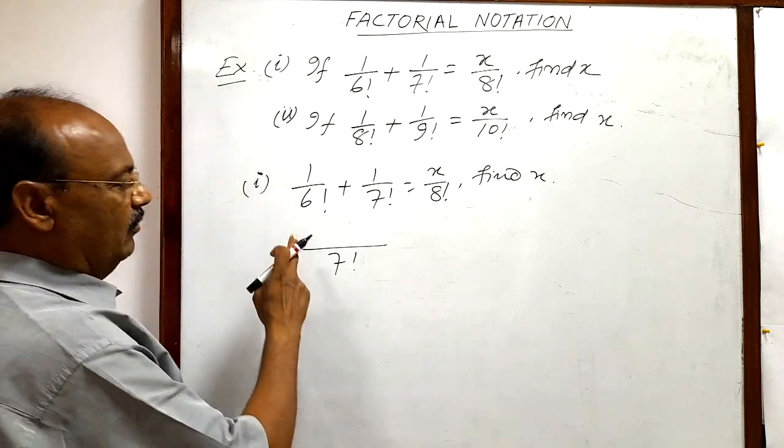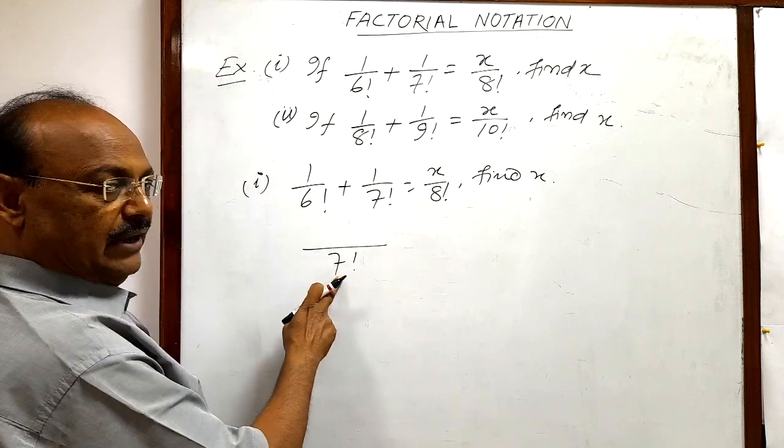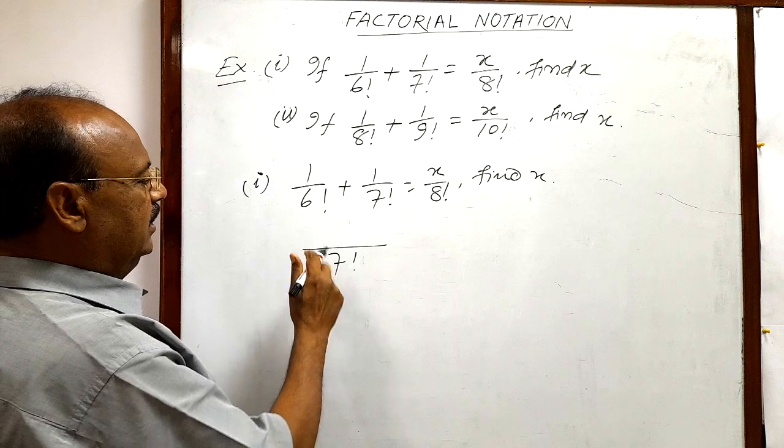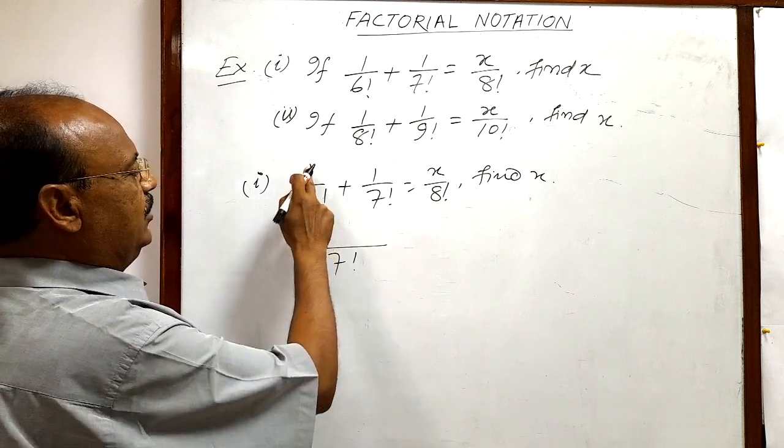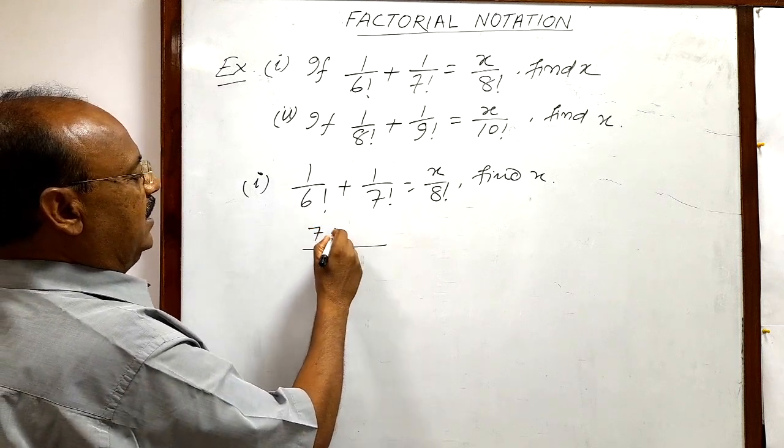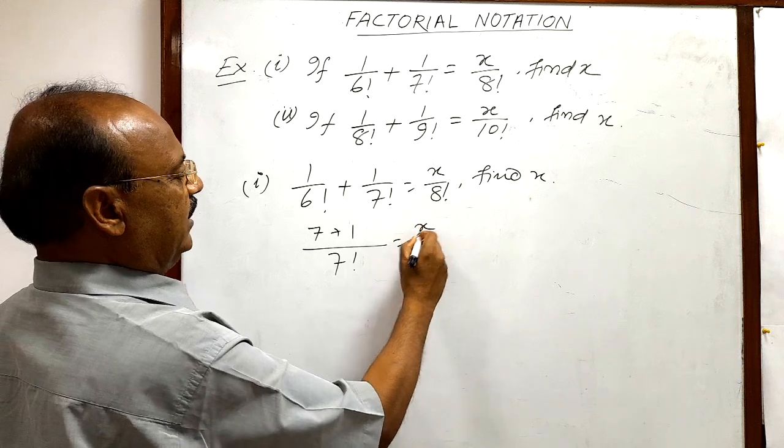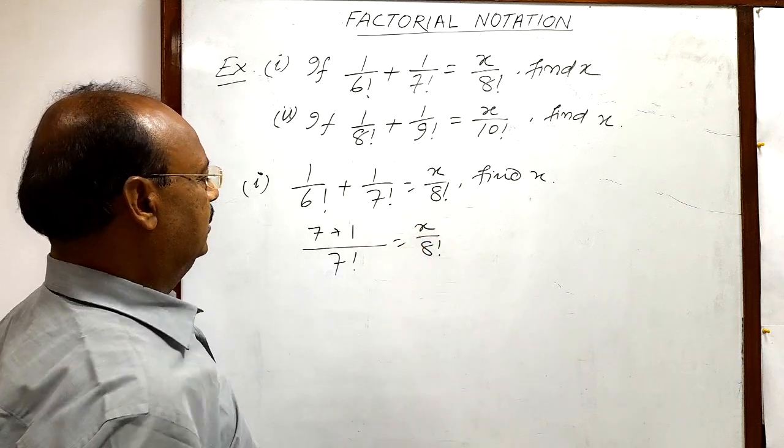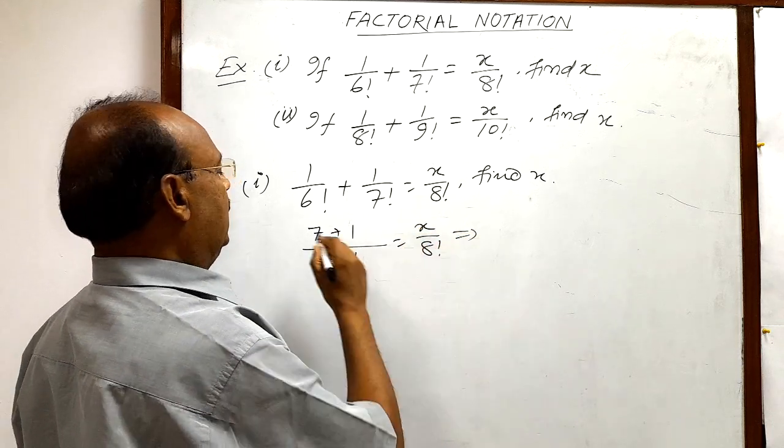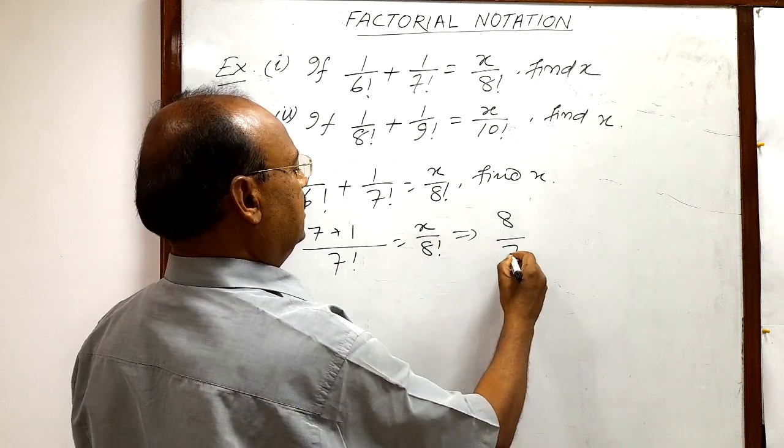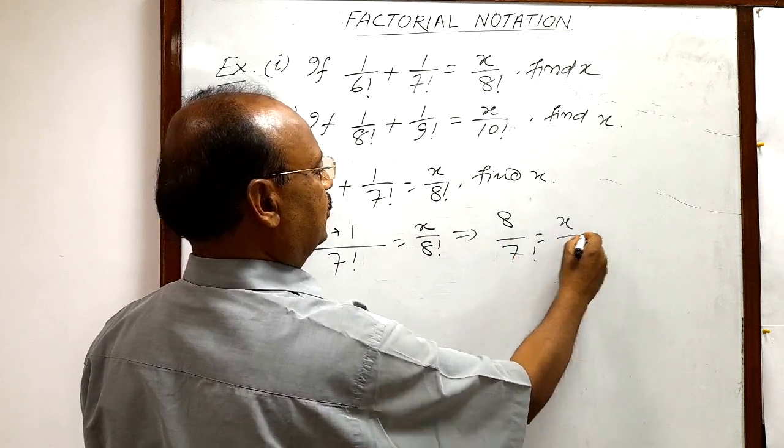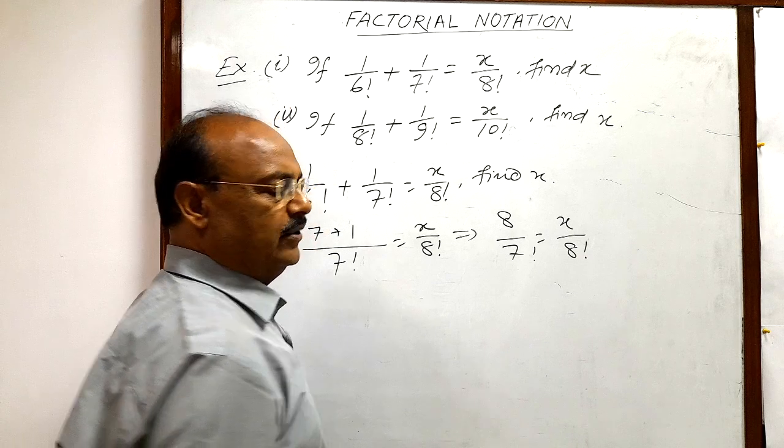And whenever this 7 factorial will be divided by 6 factorial, number will be 7 here. 7 into 1 is 7 plus 1 is equal to x by 8 factorial, correct. And we are getting here 8 by 7 factorial is equal to x by 8 factorial.